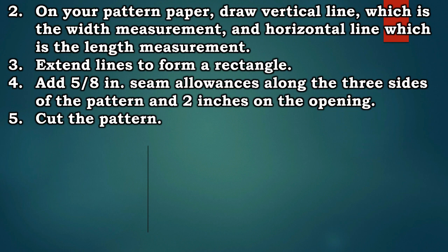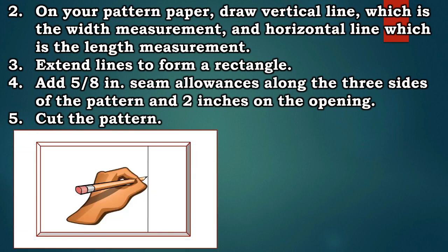Step 3. Extend the lines to form a rectangle. Step 4. Add 5/8 inches seam allowances along the three sides of the pattern and two inches on the opening. Step 5. Cut the pattern.